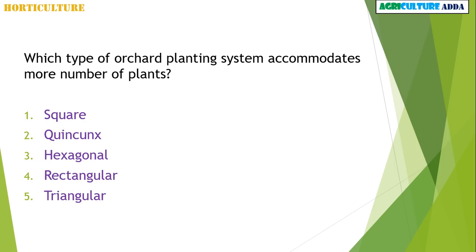Which type of orchard planting system accommodates the most number of plants? Square, Quincunx, Hexagonal, Rectangular, or Triangular? The answer is Quincunx.